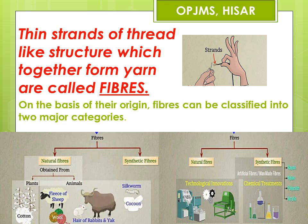Now let us discuss about the natural fibers. The fibers which we obtain from plants and animals are known as natural fibers. Cotton, jute, coir, hemp, and flax are various examples of natural fibers. These fibers are obtained from different plant parts. For example, cotton is obtained from the extensions of the seed, and jute is obtained from the fibers present in the stem of the jute plant. In addition, there are many animal fibers also, like wool and silk. Wool is obtained from the hair or fleece of sheep — not only sheep, but hair of rabbit, yak, and camel also produce wool. Silk is obtained from the silkworm.